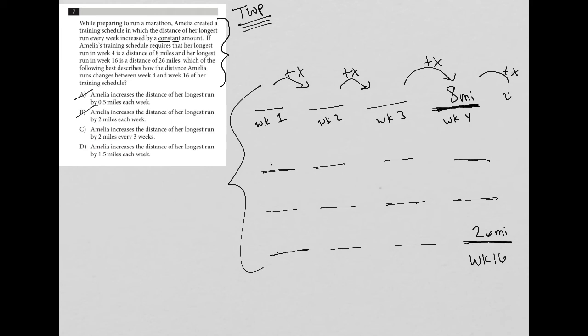Choice C says Amelia increases the distance of her longest run by 2 miles every 3 weeks. So if she's at 8 here, then this is week 5, week 6, week 7, then she'd be at 10 miles here. I think that's going to be too slow. Week 8, week 9, week 10, then she'd barely be at 12 miles. We're not going to get to 26 going that way.